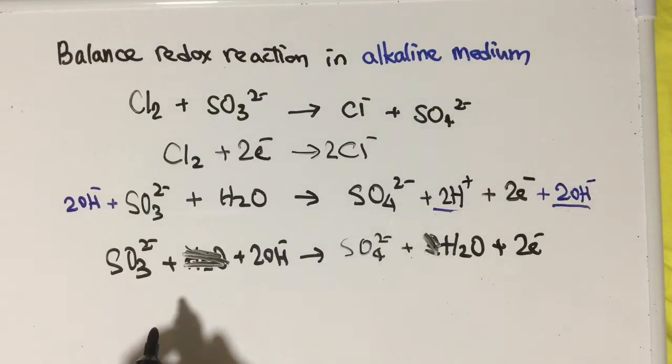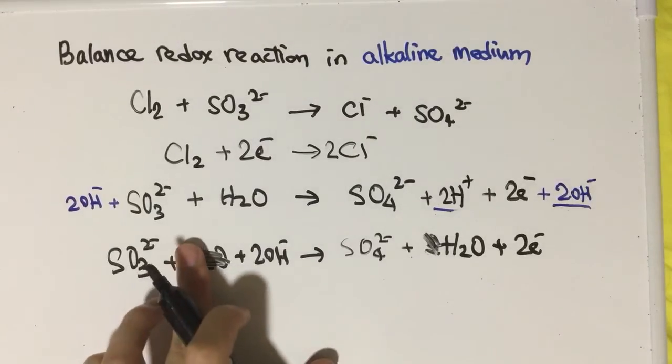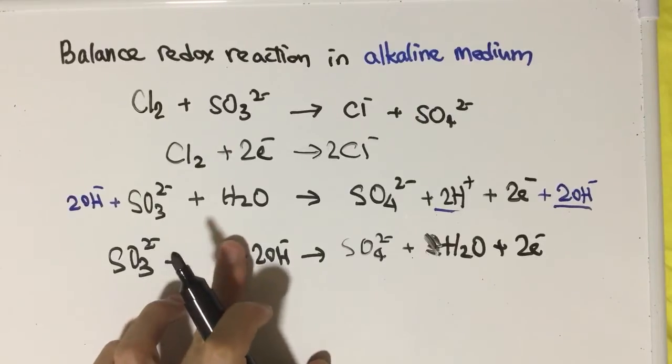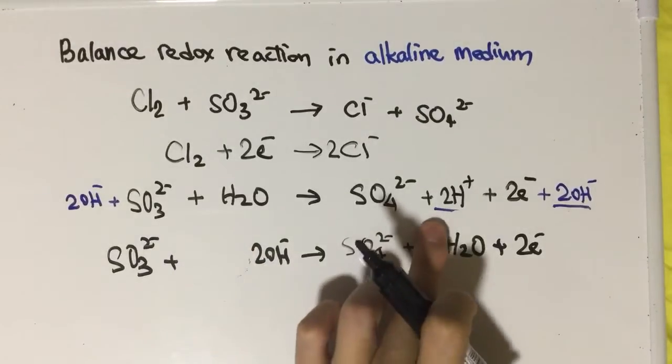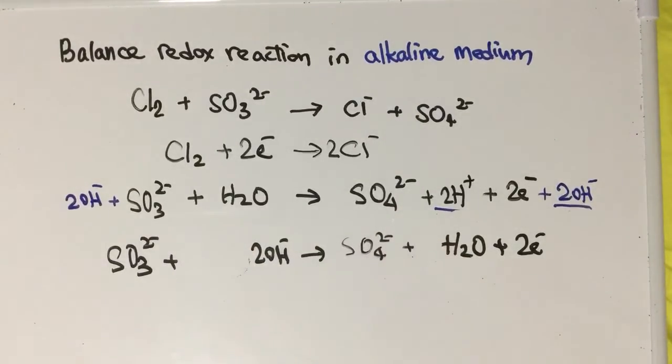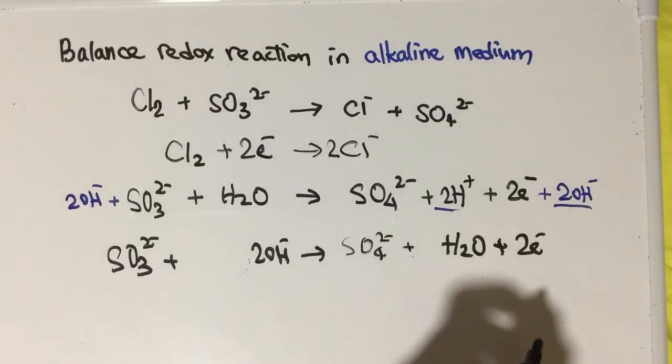The final form is SO₃²⁻ + 2OH⁻ → SO₄²⁻ + H₂O + 2e⁻. After that, we can combine the two ionic half-equations into one ionic equation.